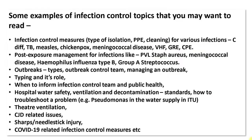Infection Control: Some examples of infection control topics to read include: 1. Infection control measures — type of isolation, PPE, cleaning — for various infections like C. difficile, TB, measles, chickenpox, meningococcal disease, viral hemorrhagic fever, glycopeptide-resistant enterococcus, and carbapenem-producing enterobacterials. 2. Post-exposure management for infections like PVL-Staph aureus, meningococcal disease, Haemophilus influenzae type B, and group A streptococcus. 3. Outbreaks — types, outbreak control team, managing an outbreak.